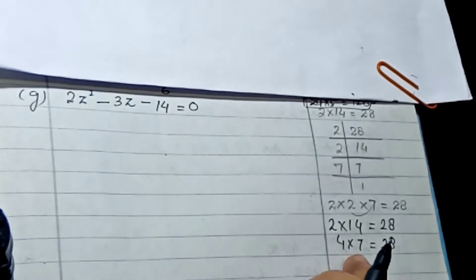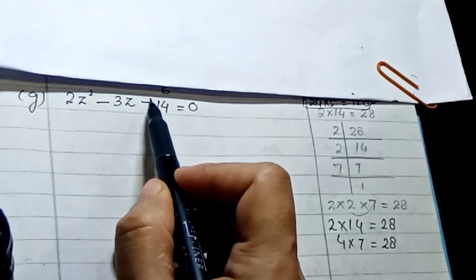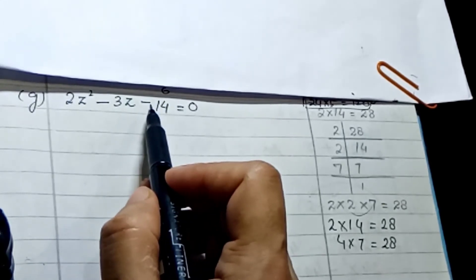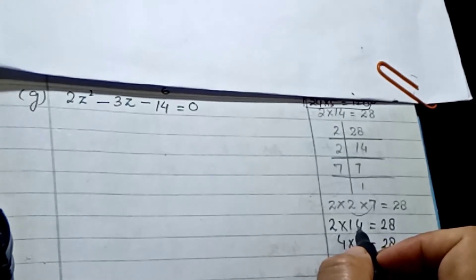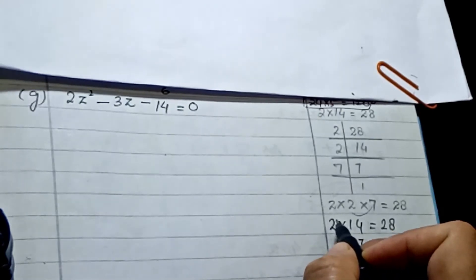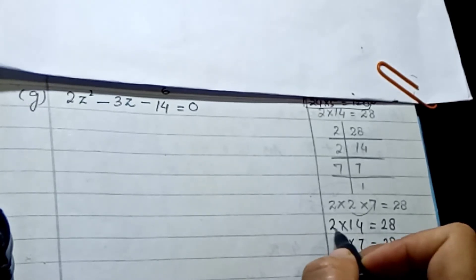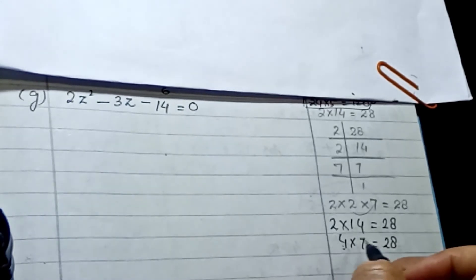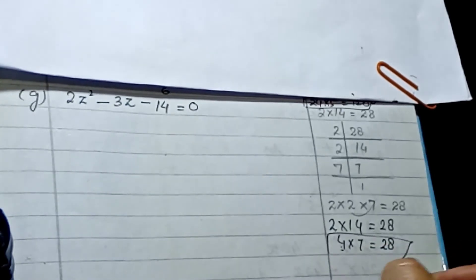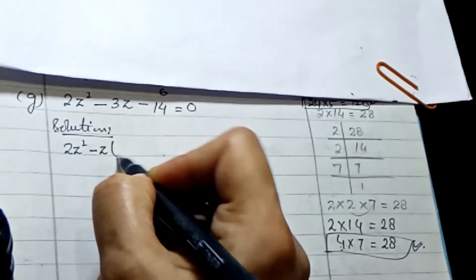To choose the right pair for splitting the middle term, we check the sign — it is minus. So we subtract the smaller factor from the larger to match the middle term coefficient of 3. 14 minus 2 gives 12, so that pair doesn't work. 7 minus 4 gives 3, so we choose the pair 7 and 4.